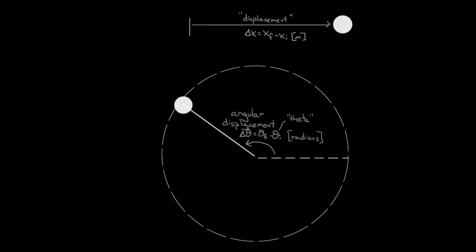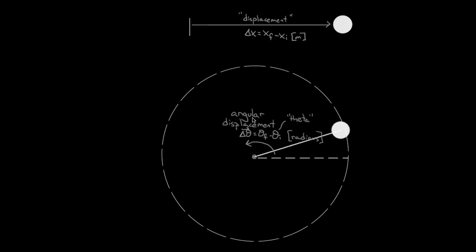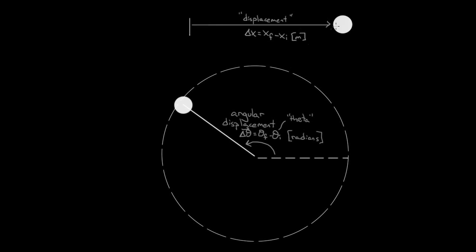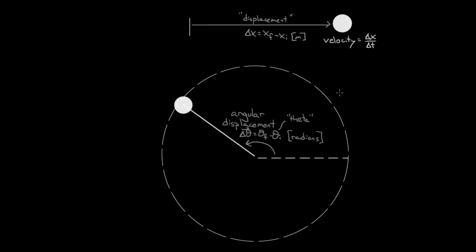Now we know how to quantify the amount of angle that this ball has rotated through, but another quantity that might be useful is the rate at which it's traveling through that angle. Knowing about the displacement is good, but you might want to know about the rate that it's being displaced. In terms of regular linear quantities, that was called the velocity, defined to be the displacement per time. So down here we'll define a similar quantity — the angular velocity, which is the angular displacement per time.